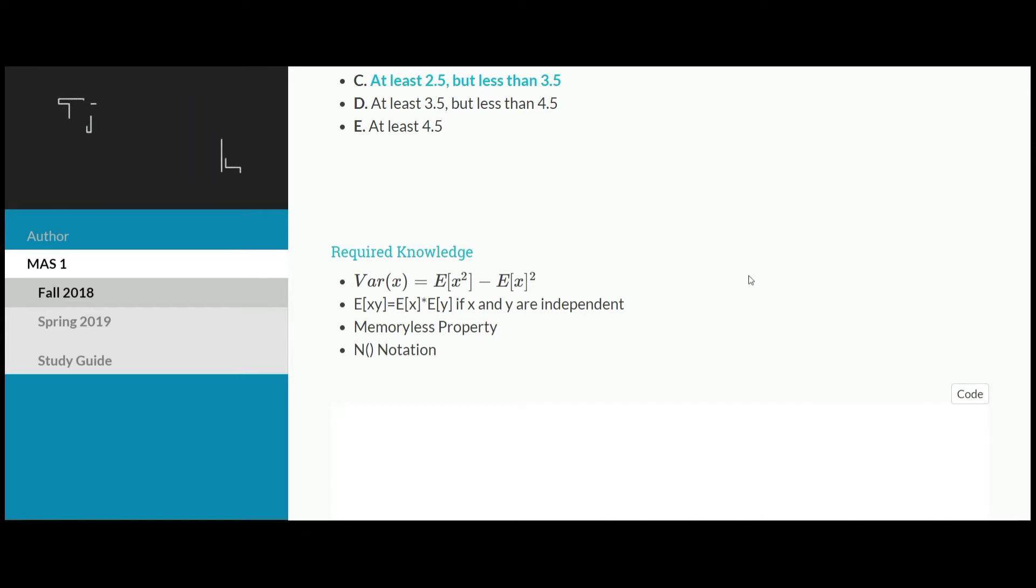The second bullet point is the expected value of x times y equals the expected value of x times the expected value of y when they are independent. If x and y are not independent, you can't simply break these two things apart. But if things are independent, it makes our life really easy and we can just break apart into two separate expected values.